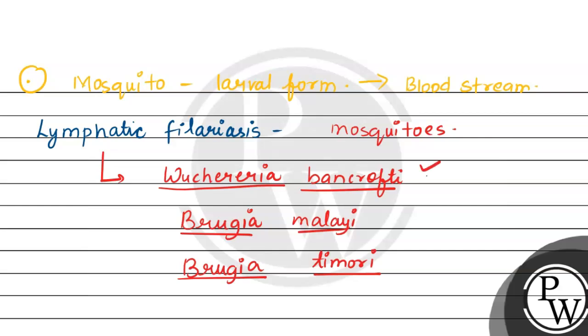So these three cause the disease which is lymphatic filariasis. The scientific name of the organism which is the most common causative agent is Wuchereria bancrofti. The two other species given here are less common and typically they are found in specific geographic regions.